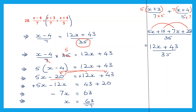So let's do this division. The sign is plus into minus, which is minus. 63 divided by 7: 7 nines are 63. So we have found the value of x. x is equal to minus 9. So this is our answer. x is equal to minus 9.